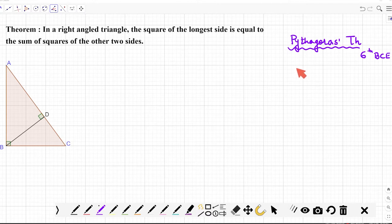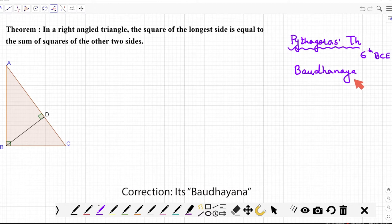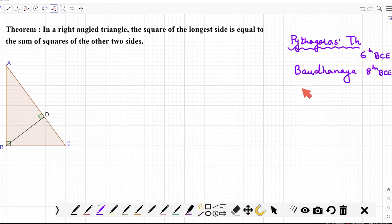There is this scholar called Baudhayana. He dates around 8th century BC. Before Christ, 8th century BC, Baudhayana actually also gave the proof of this theorem in the series of books called Sulba Sutras.